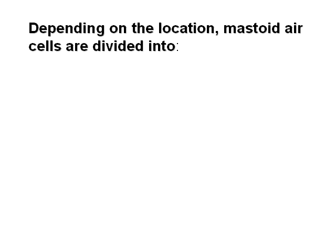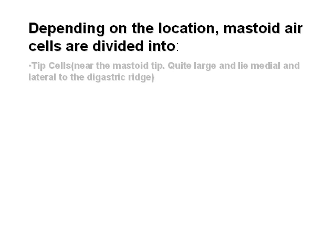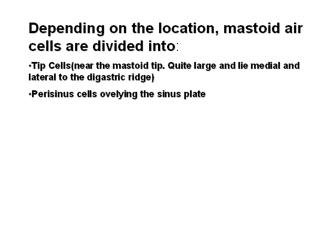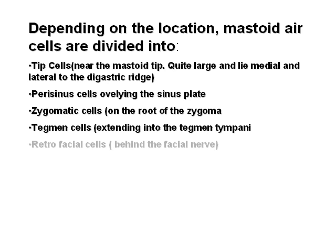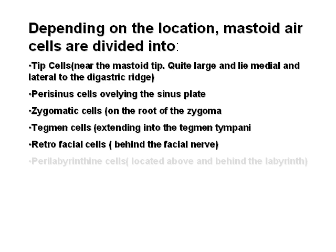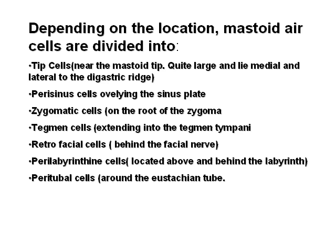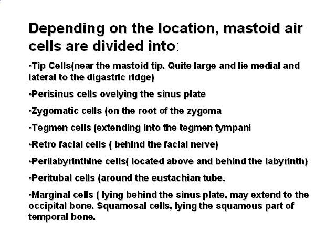Depending on location, mastoid air cells are divided into: tip cells near the mastoid tip — large cells medial and lateral to the digastric ridge, forming medial and lateral tip cells; perisinus cells overlying the sigmoid sinus plate; zygomatic cells in the root of the zygoma; tegment cells extending into the tegmen tympani; retrofacial cells behind the facial nerve; perilabyrinthine cells above and behind the labyrinth; peritubal cells around the Eustachian tube; and marginal cells behind the sinus plate, which may extend to the occipital bone.